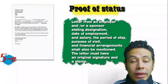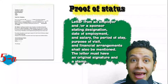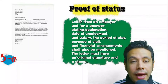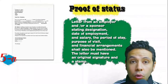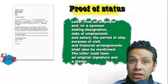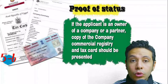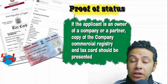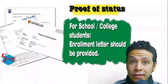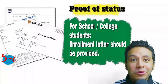In most visa application processes you will need to provide proof of status. If you are an employee, provide a letter from your employer or HR department mentioning your name, work details, salary, address, and contact numbers — with an original signature and stamp. If you own a business, present your commercial registry and tax card. If you are a student, provide an enrollment letter from your university or school.